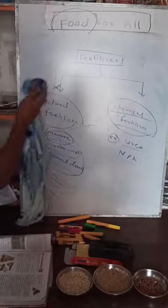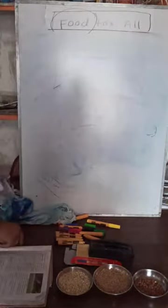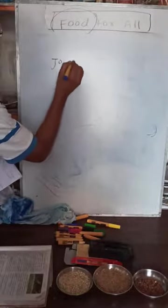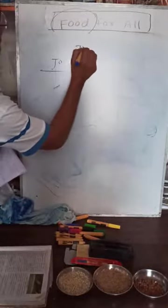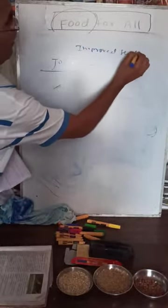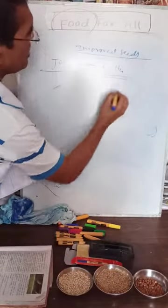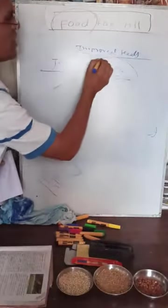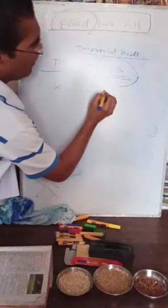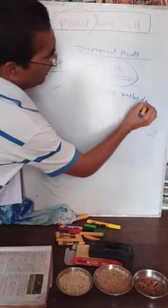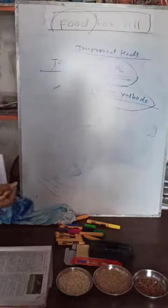Now I will give you some names of improved seed varieties. For Jowar, the improved seeds are C5, EH4, Phule Yashoda — these are the improved seed varieties of jowar developed through research. If you use these seeds, you will definitely get more yield because they are improved seeds, not traditional varieties.